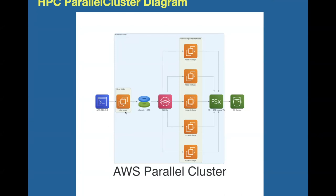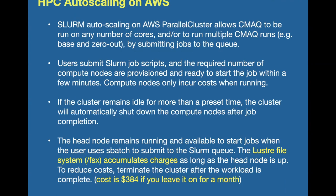Everything in the blue boxes is the parallel cluster. The first thing is the head node — it's a C6A large. The shared file system is an EBS volume. SLURM, when you submit a job to the queue, will provision the compute nodes. Depending on how many compute nodes you requested in your SLURM instructions, they will be created when you go to run CMAQ. You read data from the FSx Lustre file system, and at the end of the tutorial I provide instructions on how to copy data from that file system to your own S3 bucket to save output at the end of a run.